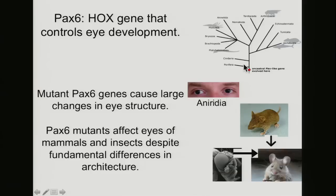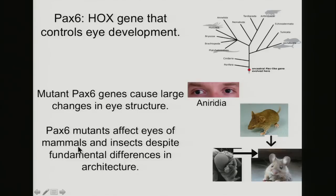This is a mutation that's very deep in our ancestry. Here's a blind mouse that has a mutation — it's the same gene that affects sight in mammals as it does in the sight of insects. So these Pax6 mutants affect eyes of mammals and insects despite fundamental differences in the architecture of our eyes.